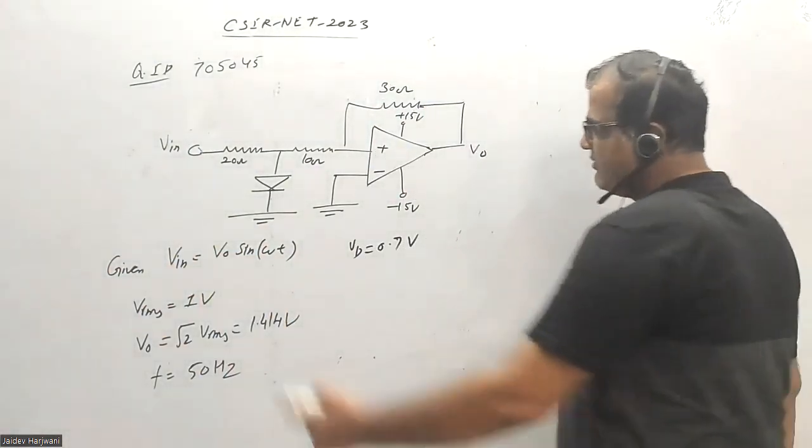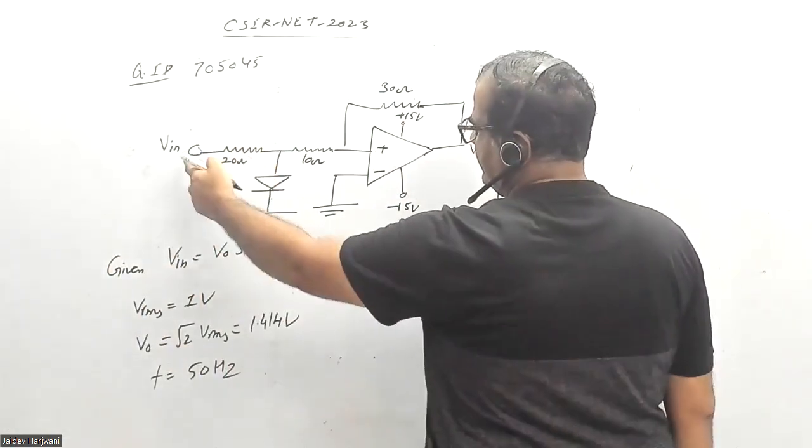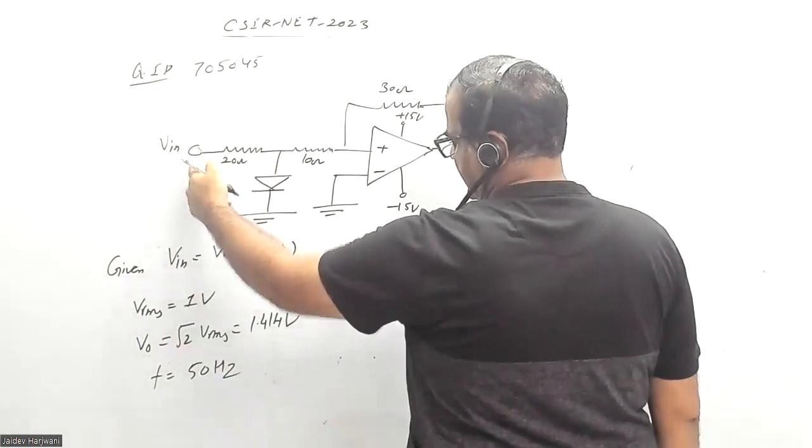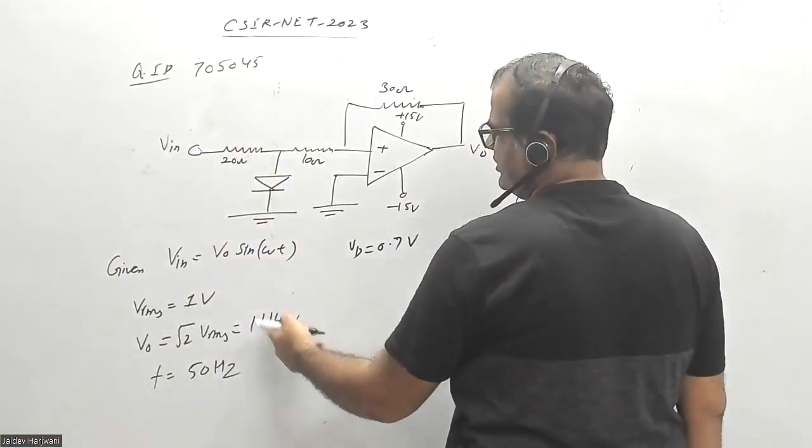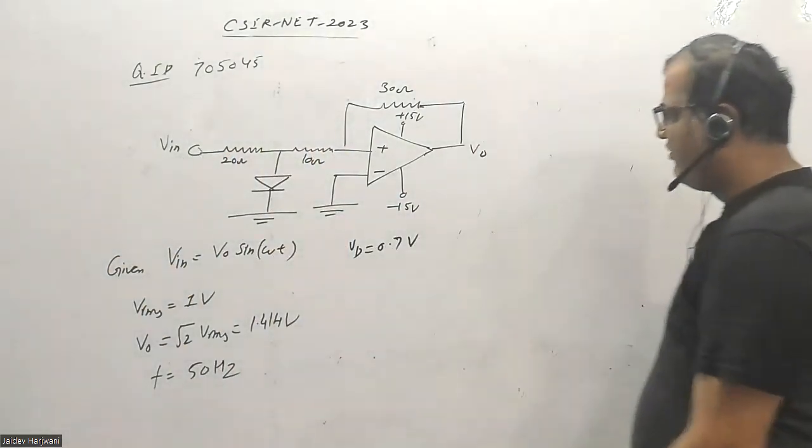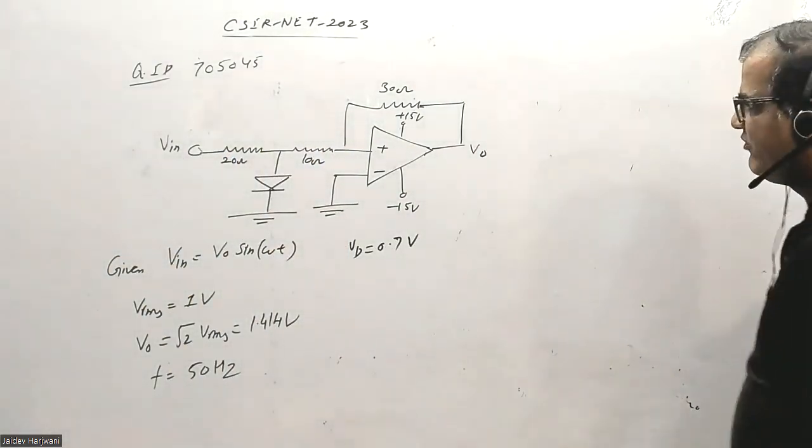Obviously, the maximum current will flow through the diode only when this is max. The max value is 1.41 volt. This max value only can make this forward biased, so let us find what is the VD value.